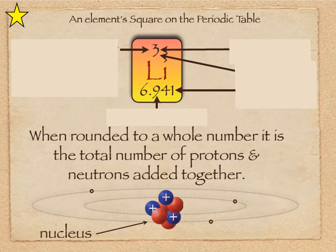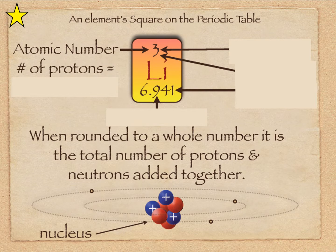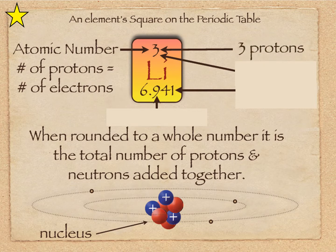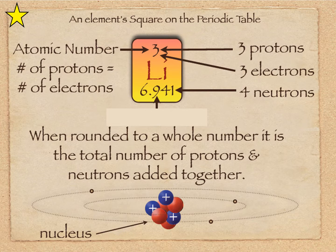So we look on the periodic table. You have a square — each element has its own square. The atomic number is also the number of protons and the number of electrons if it's neutral. That's important to understand. So for lithium here, it's number three: three protons, three electrons. The relative mass is in this case seven, so it has four neutrons. The atomic mass is the average of all the different isotopes, so when rounded to a whole number it's the total number of protons and neutrons added together. We can round 6.9 to 7, so lithium has four neutrons and three protons — three plus four gives you seven.